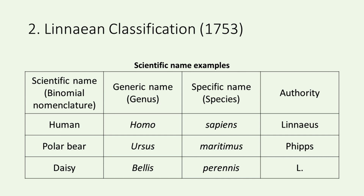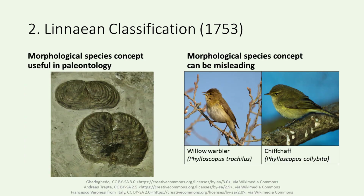Here, 'L.' is the standard abbreviation for Linnaeus. Linnaeus's approach not only brought order to the chaotic landscape of naming but also laid the groundwork for a universal language in biology. Beyond naming conventions, Linnaeus's classifications were rooted in the morphological species concept. Morphology refers to the physical structures and characteristics of an organism. Thus, a morphological species is a group of organisms with similar forms and structures that distinguish them from other organisms.